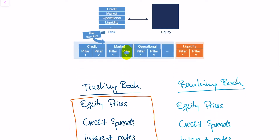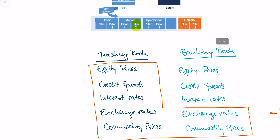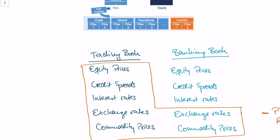To recap what we said in the last video: for market risk management, it's really important to make a distinction between assets which fall into the trading book and assets which fall into the banking book. Assets in the trading book are held for short-term trading, and assets in the banking book are held long-term.